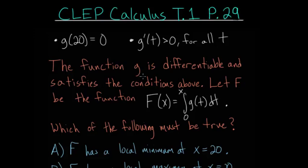The function g is differentiable and satisfies the conditions above, such that g of 20 is equal to 0, and the derivative of g is positive for all values of t.